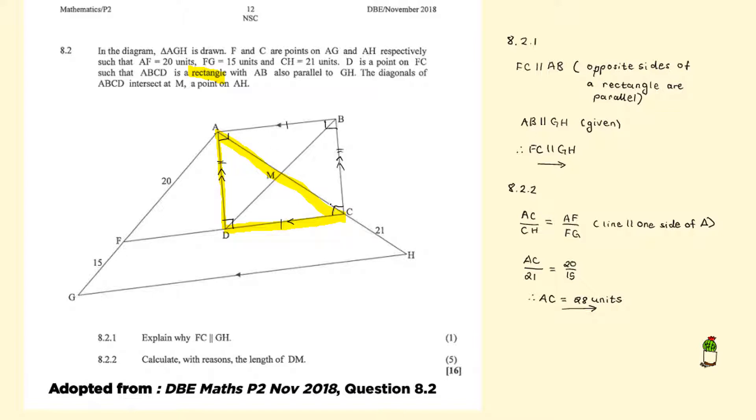But AC and DB are the same thing. They are both the diagonals of this rectangle. Remember what do the diagonals of this rectangle do? They bisect each other. So all of these lengths are exactly the same. They are all equal to each other.